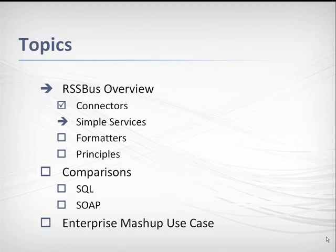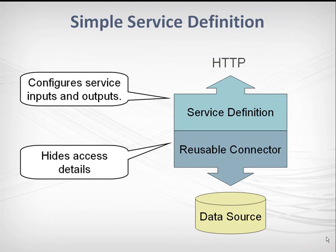Now let's talk about using connectors to build simple services. A simple service is a connector wrapped in a service definition script written in RSBScript. This file gives the connector a URL, so it becomes callable from the web. The connector contains the reusable data access code, and the RSBScript service definition provides details about the specific data source you want to access. This script typically includes the name and data source or table you want to access, and the particular fields you want to read or write. It also might contain default input values and some filtering of the connector output. RSSBus server and desktop products contain a wizard that can generate these scripts for you.